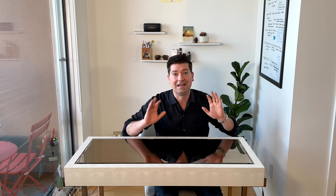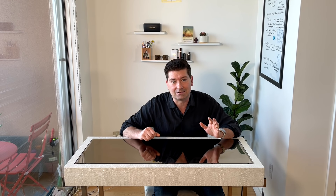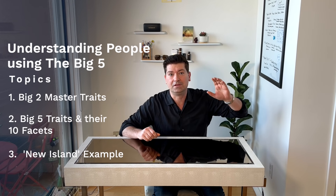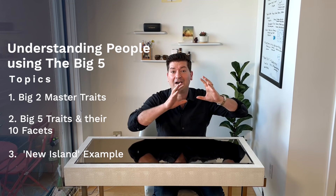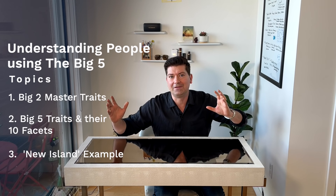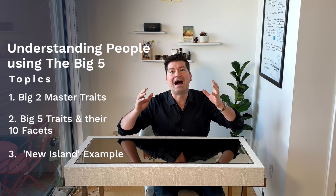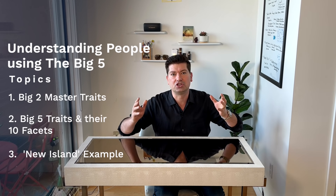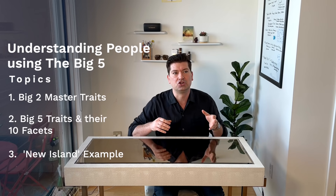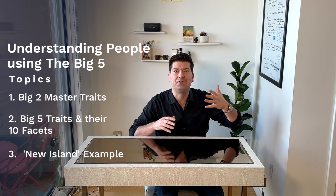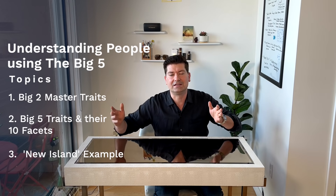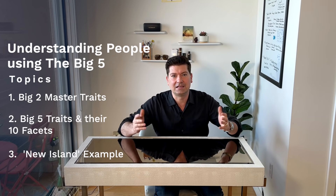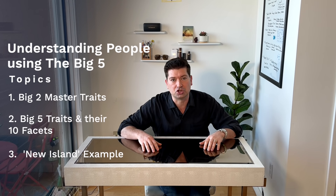In this video I'm going to go over the five factor analysis — the Big Five — what the two master traits are, the five sub-traits which are also called the Big Five, and also the ten sub-traits. Each of these Big Five is also subdivided into two other traits, and this is thanks to Jordan Peterson who came up with the research.